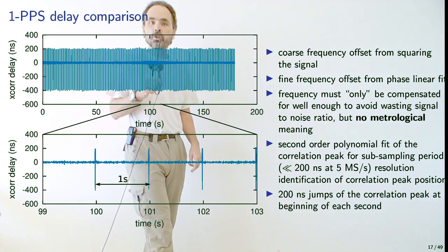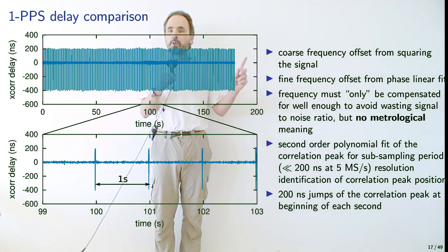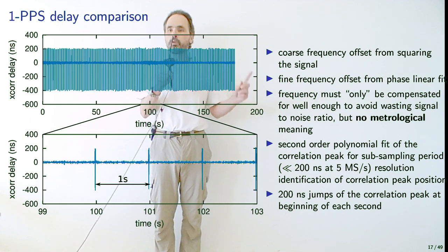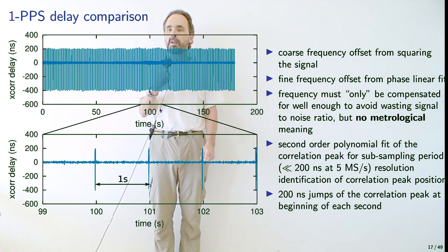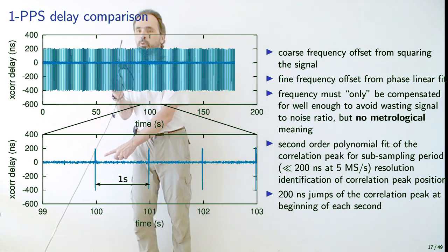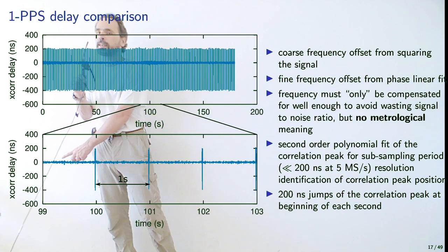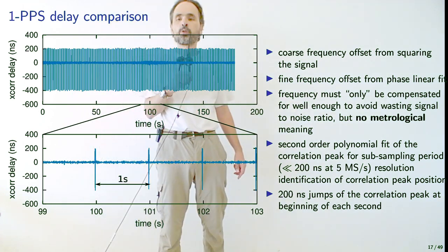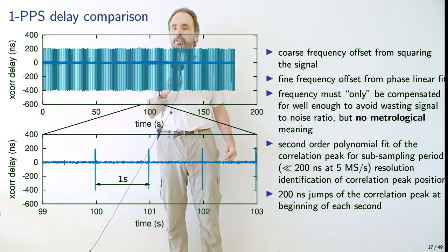The 1800 Hz offset at the bottom of the chart is the frequency offset introduced by the satellite transponder with respect to its nominal frequency. Now that we have these correlation peaks, as the 3-minute record evolves you see the correlation time delay. The sampling rate of 5 MHz gives 200 ns resolution, but we achieve much better than that using a second-order polynomial parabola fit of the correlation peak — resulting in much better than 200 ns standard deviation.